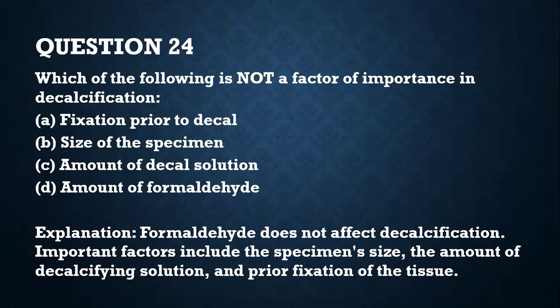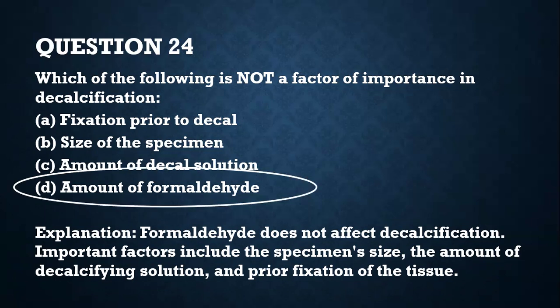Question 24. Which of the following is not a factor of importance in decalcification? A — fixing prior to decalcification; B — the size of the specimen; C — the amount of decalcification solution; D — the amount of formaldehyde. The answer is D — the amount of formaldehyde is not a factor — because what affects decalcification is the sample size, the amount of decalcification solution used, and whether the tissue has been fixed beforehand.